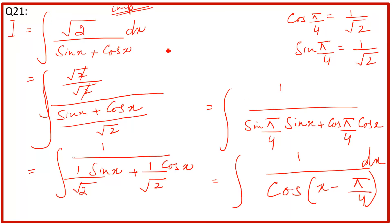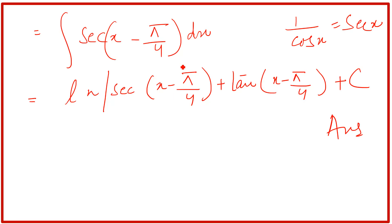Here, the formulas are used. We have cos π/4 equals 1/√2. We put these values, and apply the formula: 1 divided by cos(x - π/4) equals sec(x - π/4). Then we integrate, because the integral of sec x equals log(sec x + tan x) plus c.